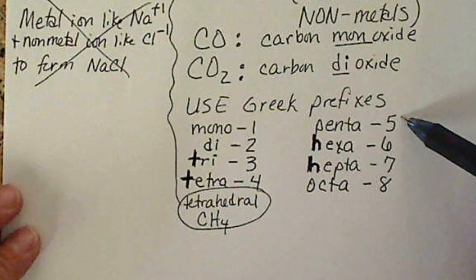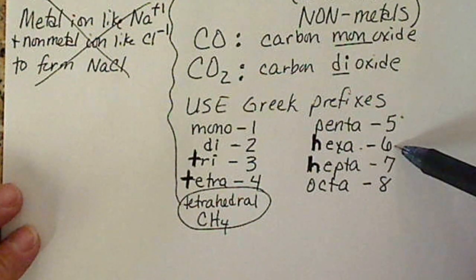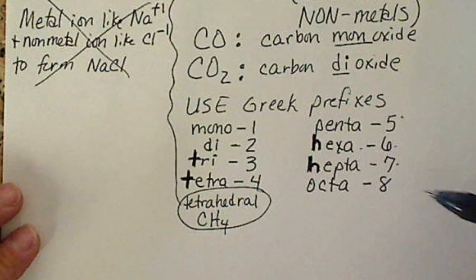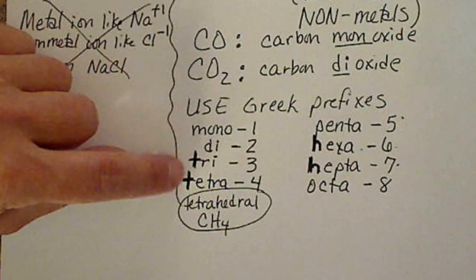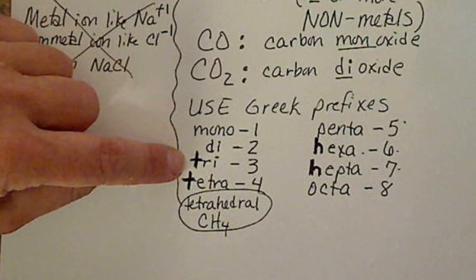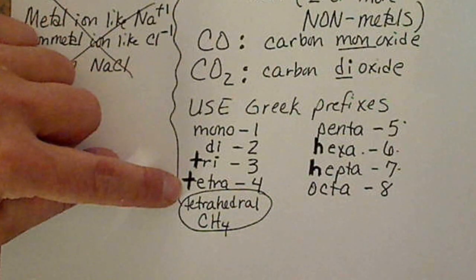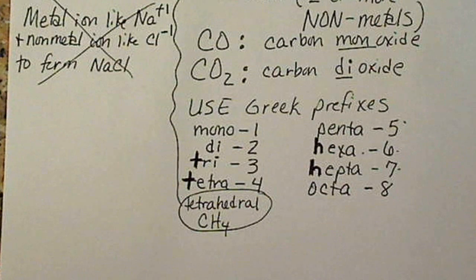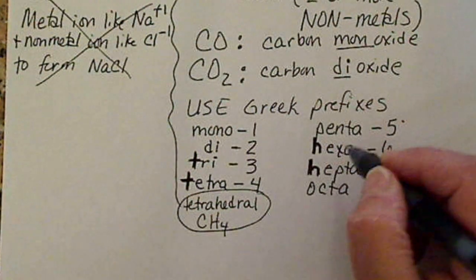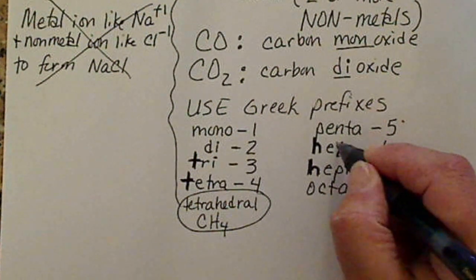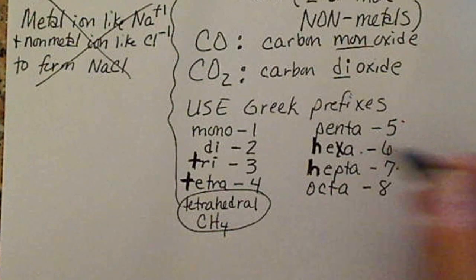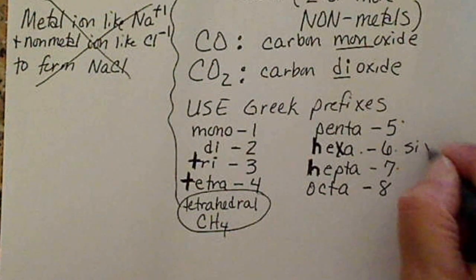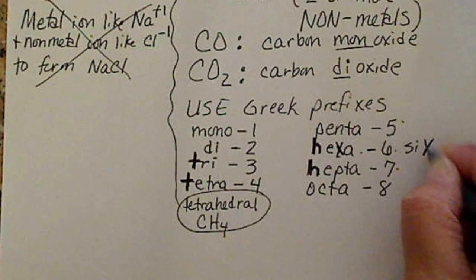Penta means five, hexa is six, hepta is seven, octa is eight. The two T's are right next to each other. If we remember tri as three, we should know tetra is four. And hexa and hepta, the two H's, are both together. Another thing we can use to remember this is hexa and the word six both have an X.